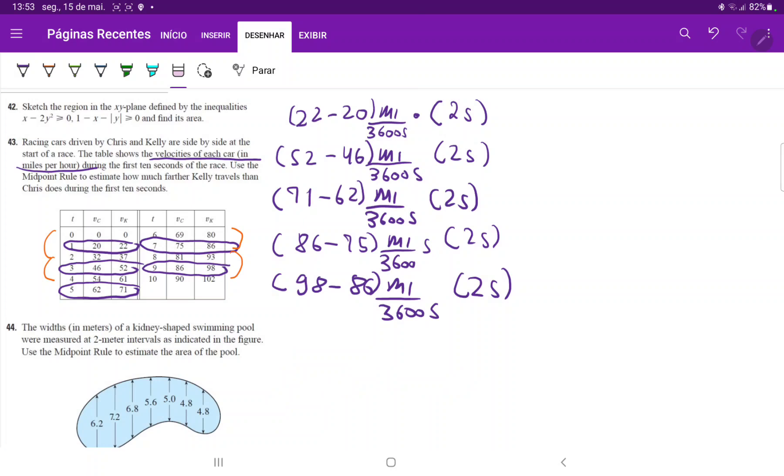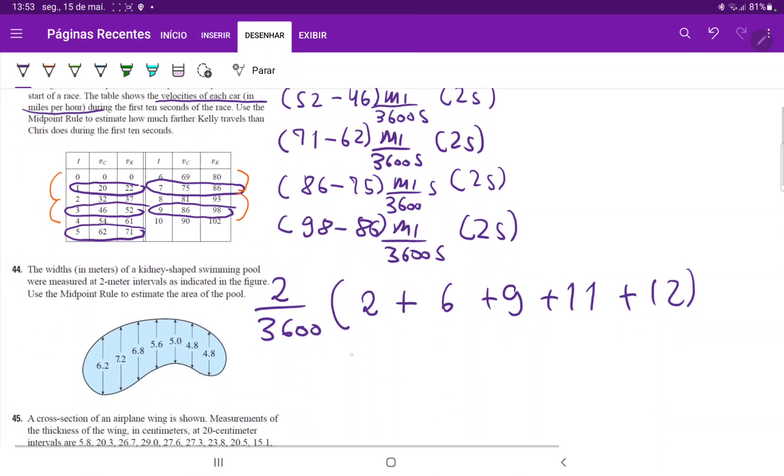So all that's missing for us is to kind of do the math here, and what I'm going to do is I'm going to factor out the 2 over 3,600, which is what they all have in common. And then this is 22 minus 20, so that is 2 plus, that is 52 minus 46, plus 6, 71 minus 62, plus 9, and then 86 minus 75, so plus 11, and then plus 12.